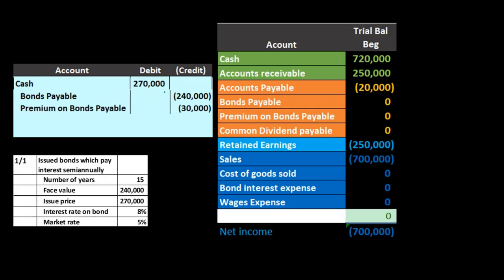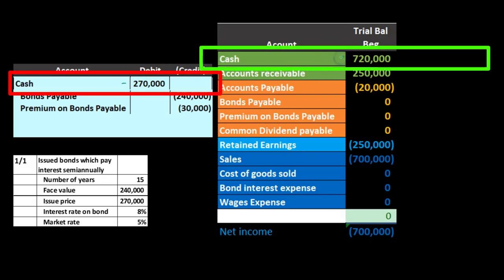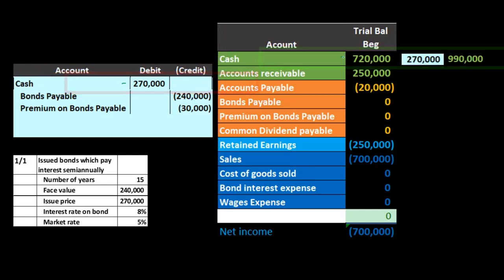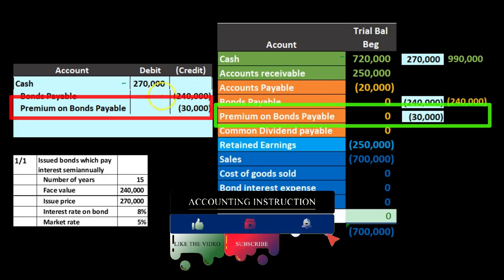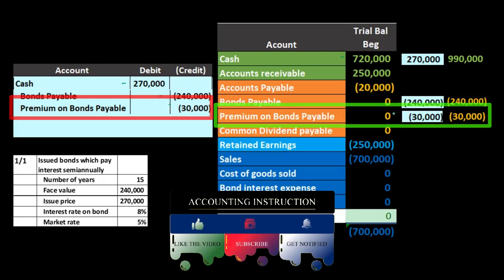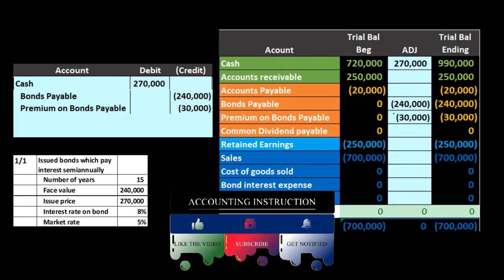There's a difference of $30,000, and that's going to be what we call a premium — the premium on the bond. On the trial balance, cash goes from $720,000 up by $270,000 to $990,000. The bond payable goes from zero up in the credit direction to $240,000. The premium goes from zero up by $30,000 to $30,000.